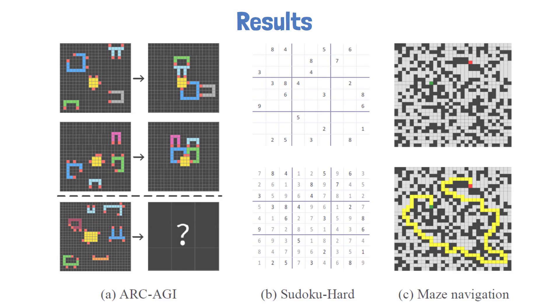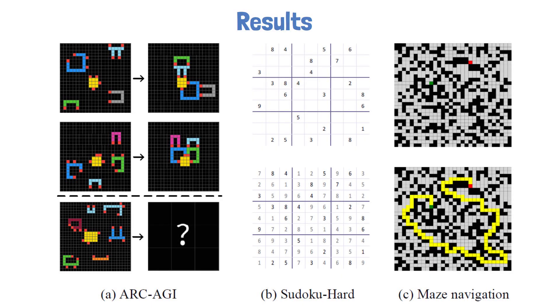Before diving into the architecture, let's look at the results. Since the Tiny Recursive Model is evaluated on the same benchmarks as the Hierarchical Reasoning Model, we'll use this figure from the HRM paper to illustrate the types of reasoning tasks used for evaluation. On the left is an ARC-AGI example, an IQ test-like puzzle where the model needs to figure out rules from a few examples to solve the puzzle correctly. In the middle we see Sudoku Extreme, a dataset the researchers extracted from existing Sudoku datasets and made significantly harder to solve. On the right we have maze solving problems where the model needs to find the optimal path between two points.